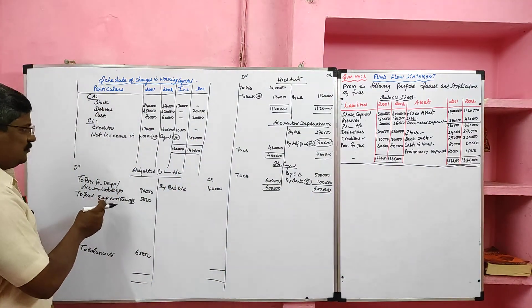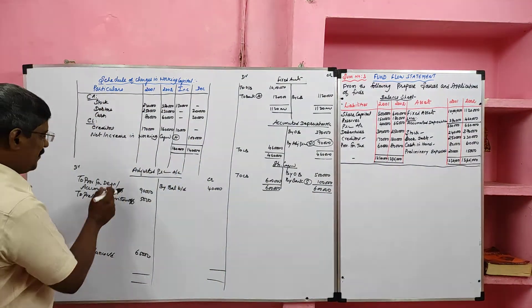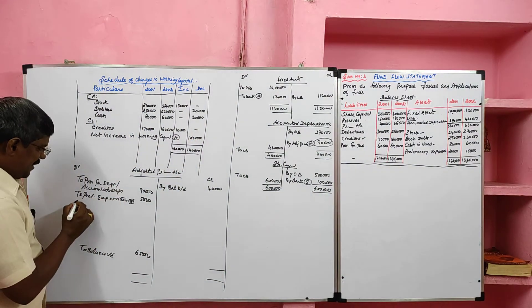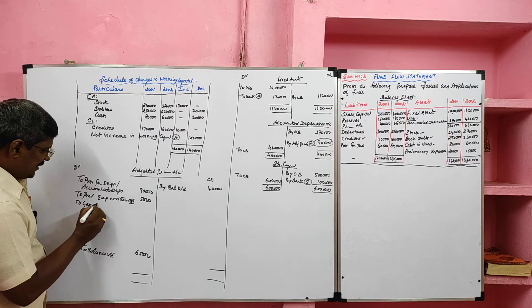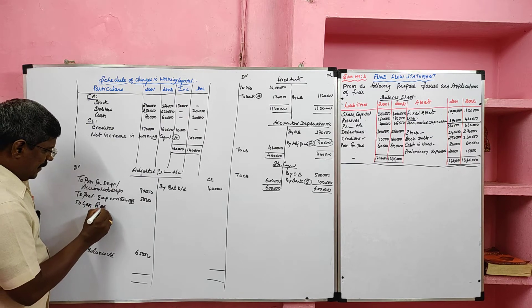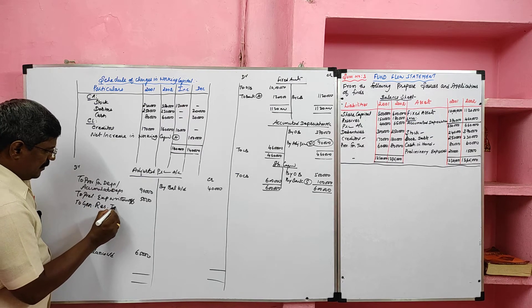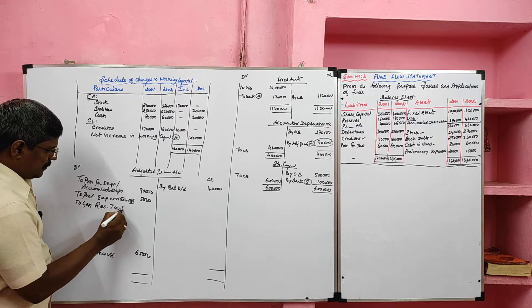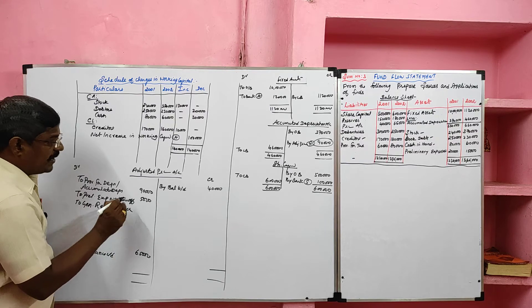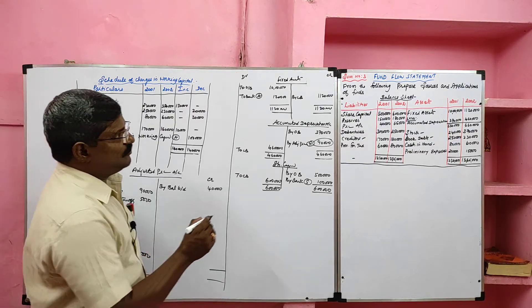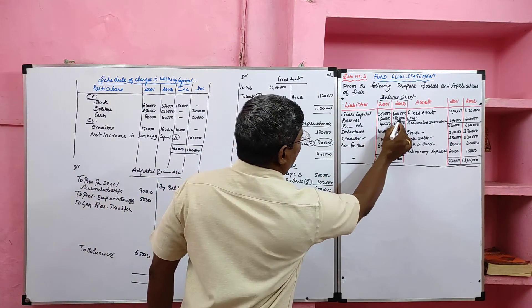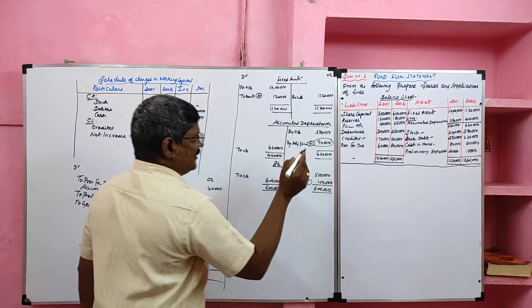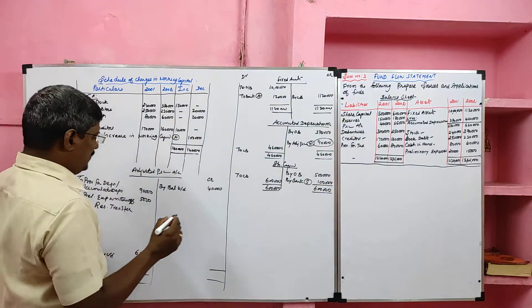For general reserve, we need not prepare a ledger account. The difference should be transferred to the adjusted P&L account debit side as general reserve transfer. The opening balance is 1 lakh 50 and closing is 1 lakh 80, so the difference is 30,000.